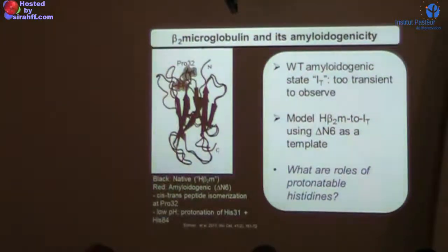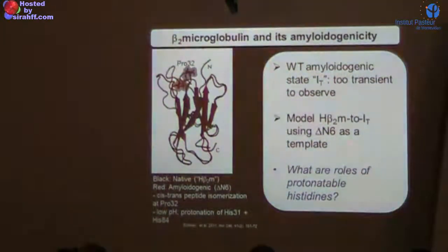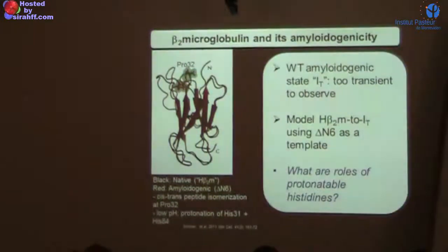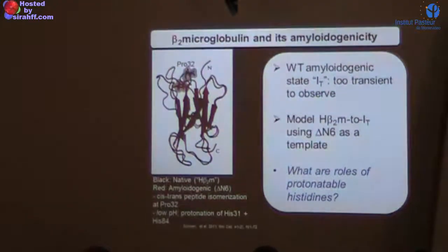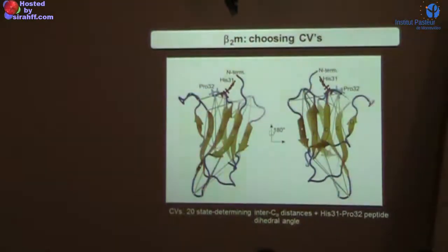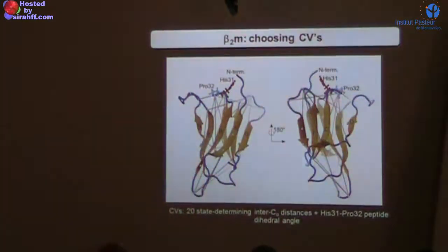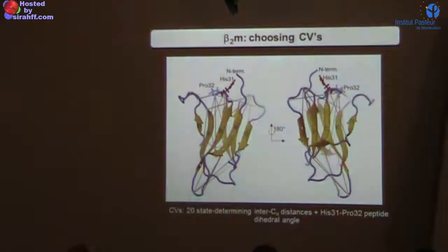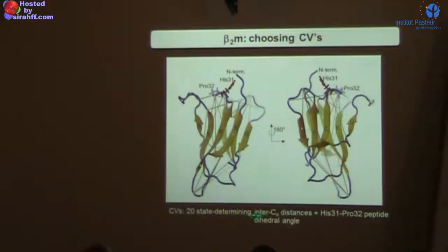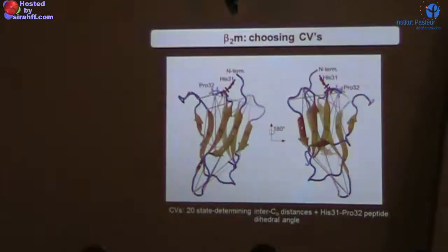Low pH under dialysis is thought to trigger aggregation. Looking at the sequence, there are histidines that could go from neutral to protonated at a small shift in pH. We asked what role those histidines play when protonated. For collective variables, we chose 20 important inter-alpha-carbon distances that discriminate the two states, plus the His31–Pro32 peptide dihedral angle, giving 21 collective variables total.